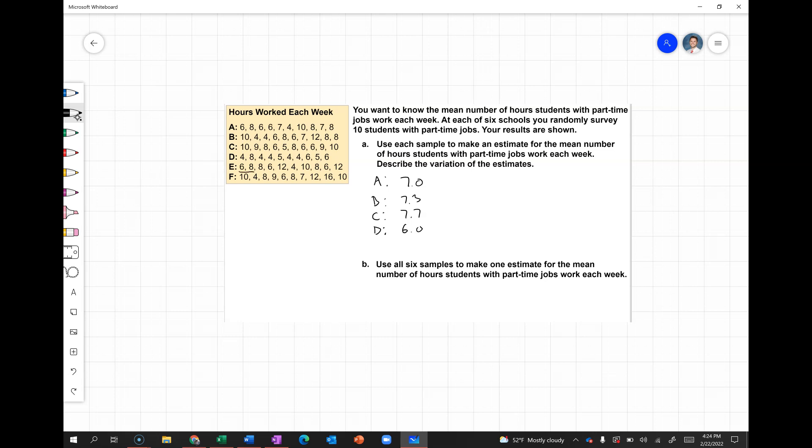School E. 6 + 8 is 14, + 8 is 22, + 6 is 28, + 12 is 40, 44, 54, 62, 68, 80. 90 divided by 10 is 9.0.